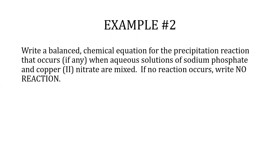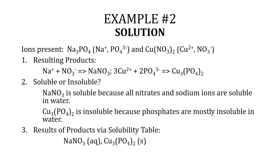Example 2: Write a balanced chemical equation for the precipitation reaction that occurs, if any, when aqueous solutions of sodium phosphate and copper(II) nitrate are mixed. If no reaction occurs, write no reaction. The ions from the reactants are Na⁺ and PO₄³⁻ from sodium phosphate, and Cu²⁺ and NO₃⁻ from copper(II) nitrate. The resulting products are NaNO₃ and Cu₃(PO₄)₂. NaNO₃ is soluble because all nitrates and sodium ions are soluble, while Cu₃(PO₄)₂ is insoluble because most phosphates are insoluble in water.